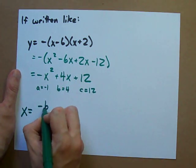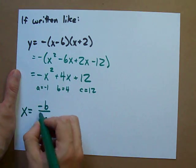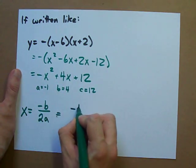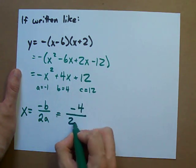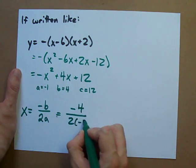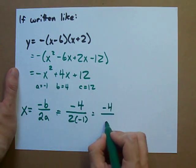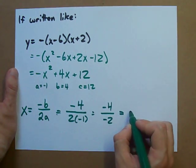And, we can find the x-coordinate of the vertex with negative b over 2a. In this case, it's negative 4 over 2 times negative 1. It turns out to be negative 4 divided by negative 2, or 2.